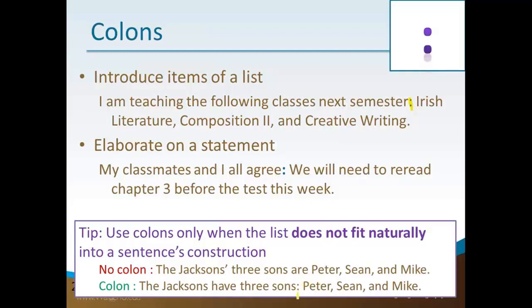I would use a colon here, however: 'The Jacksons have three sons: Peter, Sean, and Mike.' You can hear the pause when reading this — that's what the colon indicates. You should take a pause, and then after the colon is where you list the different elements. So only use a colon when the list doesn't fit naturally into the sentence.